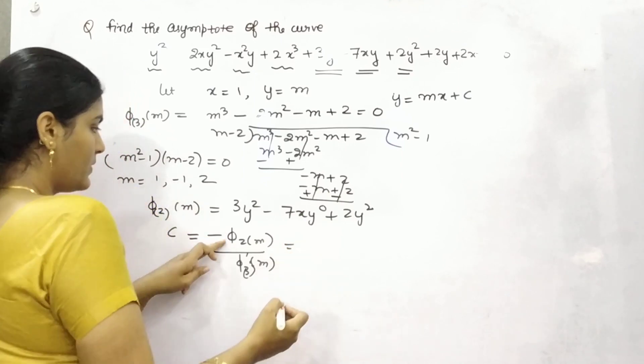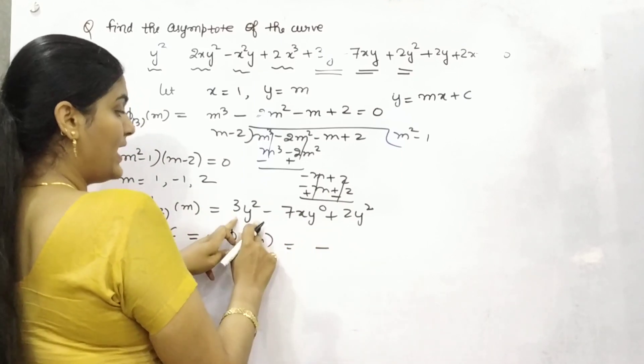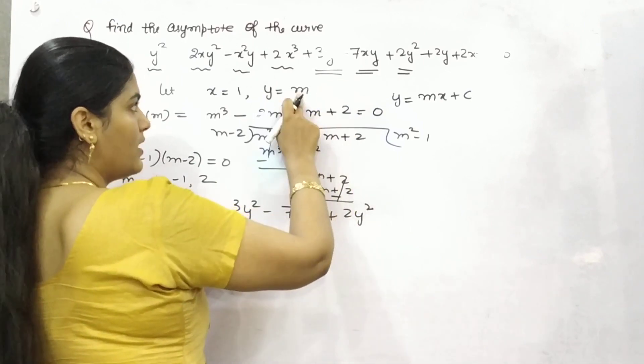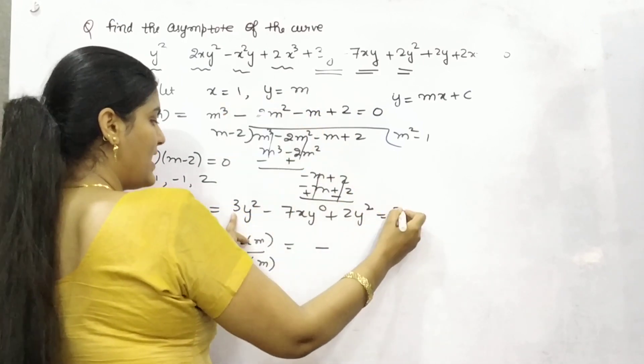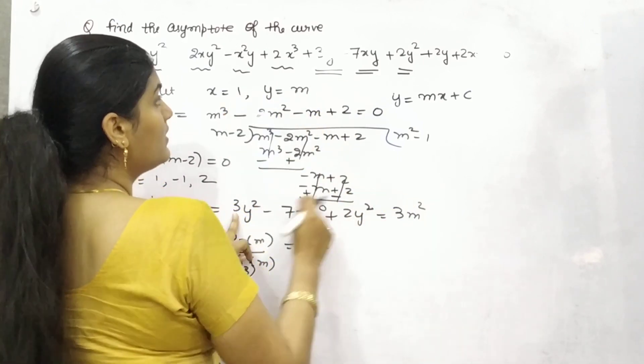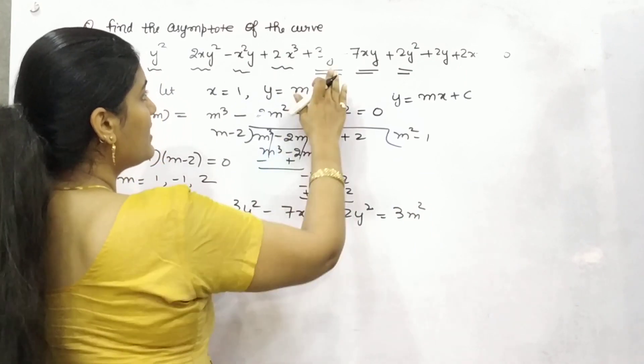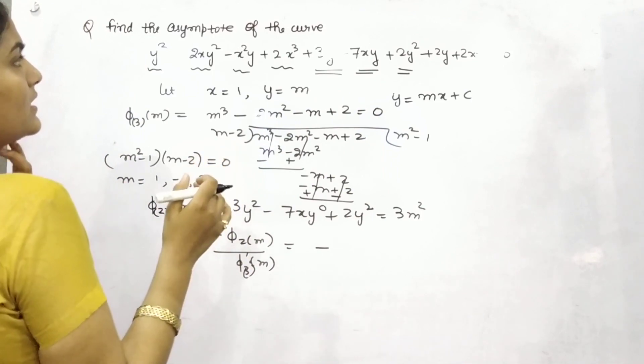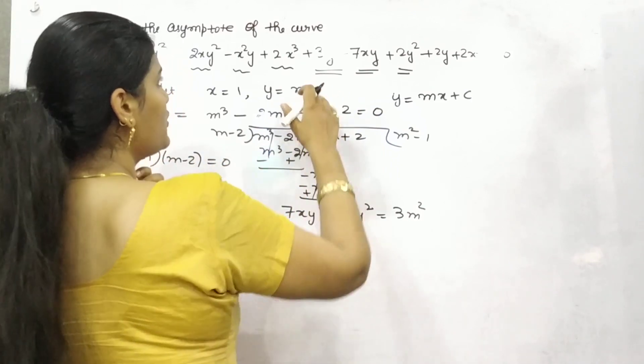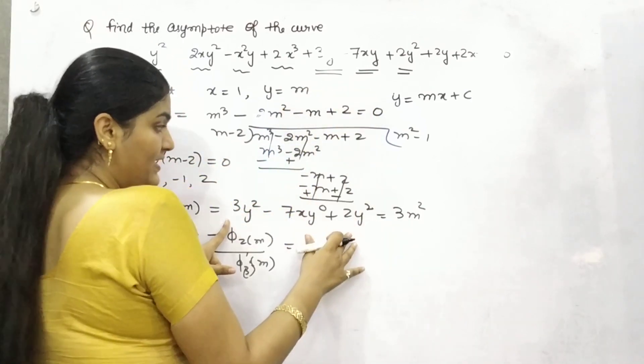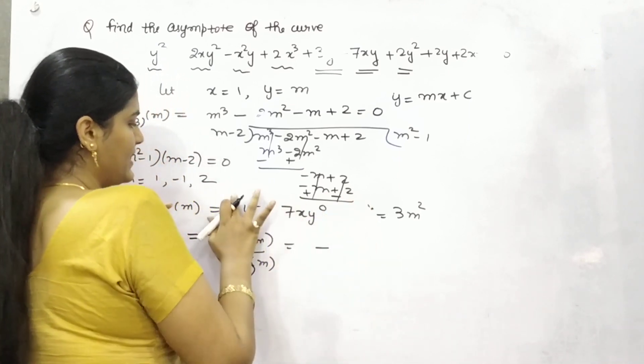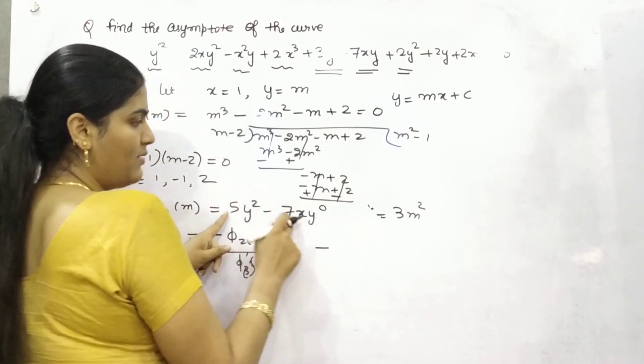So here also put y as m and x as 1. So y as m, 3m square. This is 3y square. This is also 2y square. So this should be 5y square. It's strange, but yes. If it is 3 and 2, you can put it as 5. 5y square minus 7xy. So 5m square minus 7 times x is 1, 7m.